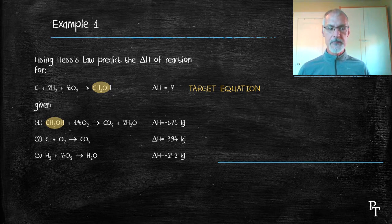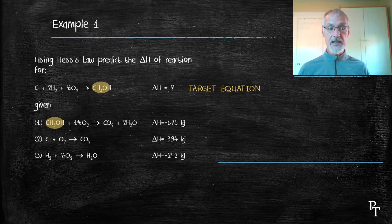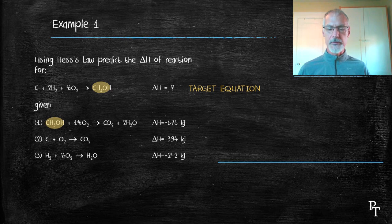Methanol is unique to the first equation and unique to the overall target equation. But I do notice a problem. That they're on the wrong sides. What I mean by on the wrong sides is in the target it's a product and in equation one it's a reactant.